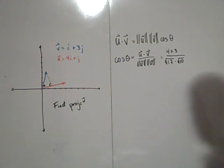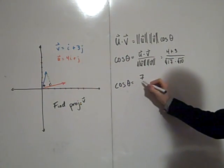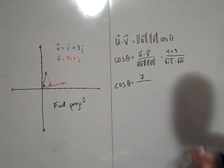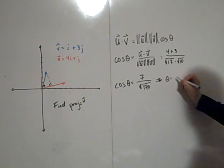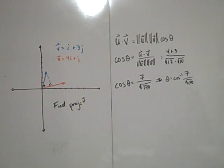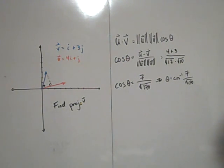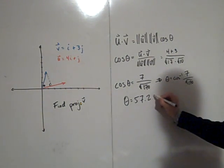So cosine of theta equals 7 over the square root of 170. This means theta equals the inverse cosine of 7 over root 170. Make sure your calculator is in degrees. Taking the inverse cosine of 7 divided by root 170, we get theta is approximately 57.23 degrees.